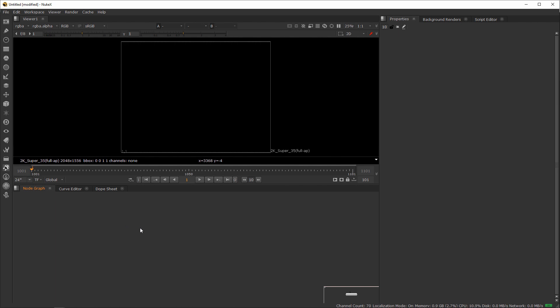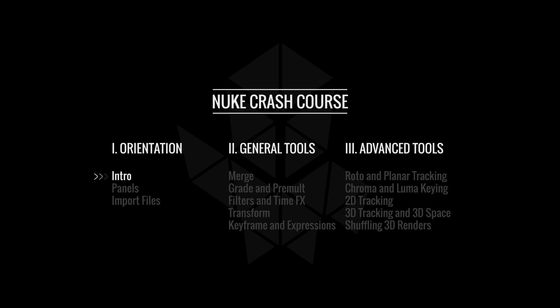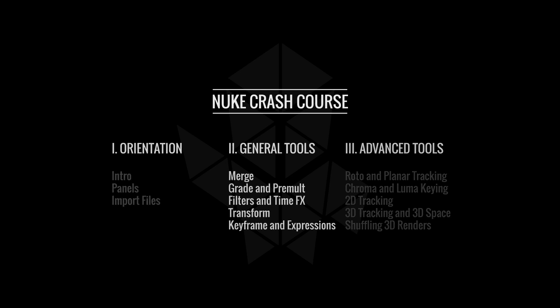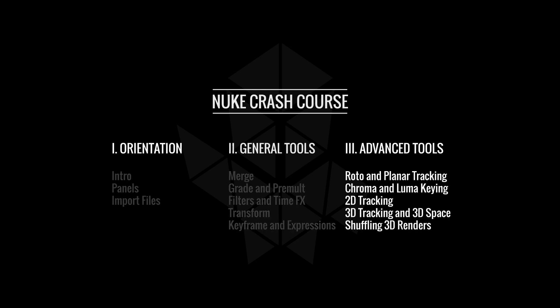As the title suggests, this is a crash course in Nuke, so it's going to be so long that I've actually decided to separate it into three parts. Part one, which is the one you're watching right now, is the orientation — I'll show you how to import files and how to navigate inside Nuke. Part two is the general tools, and by the end of that video you can almost do anything inside Nuke. Part three is the advanced tools — common advanced tools like roto, keying, tracking and match move. So without further ado, let's just dive in.